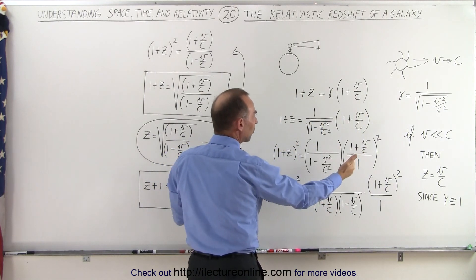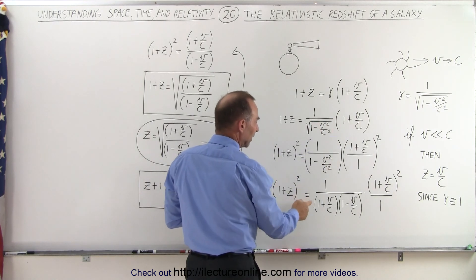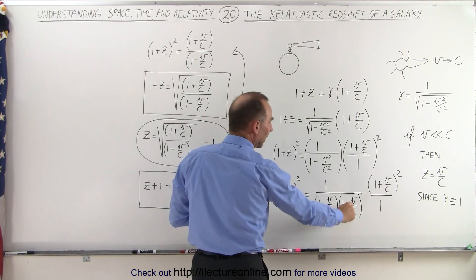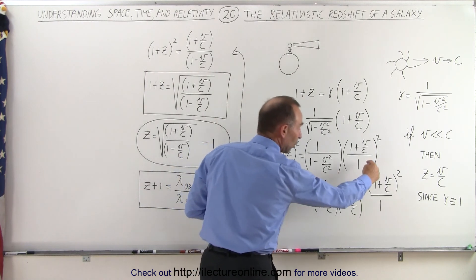If we square both sides, we get rid of the radical. Factoring the denominator gives us (1 + v/c) times (1 - v/c), which cancels out with one of these terms.